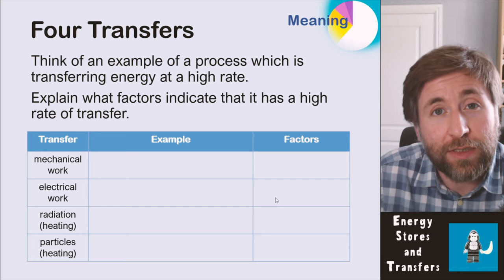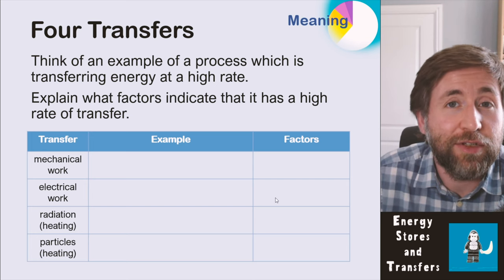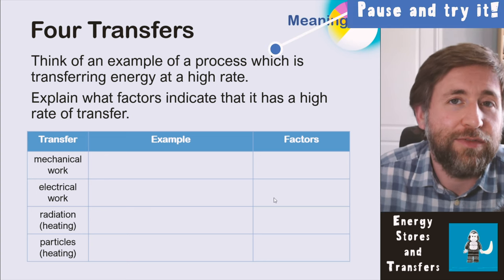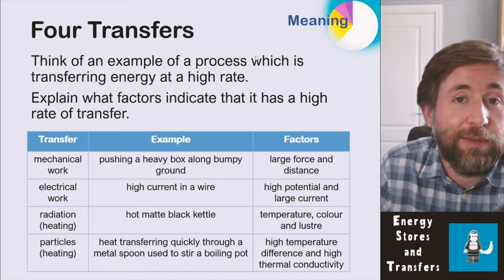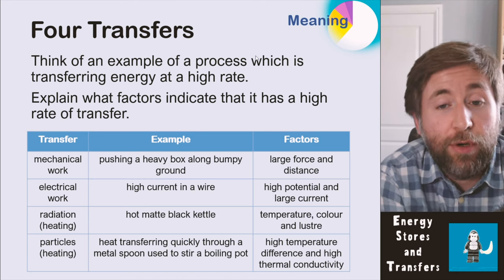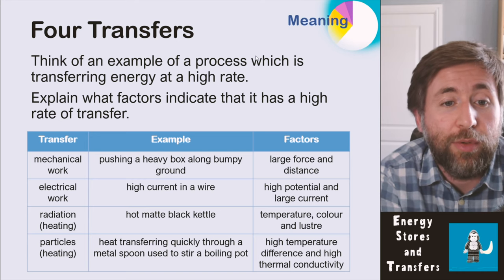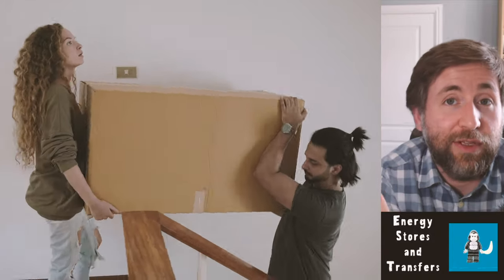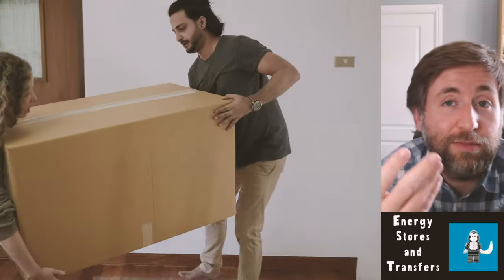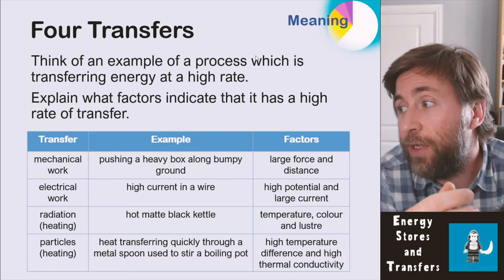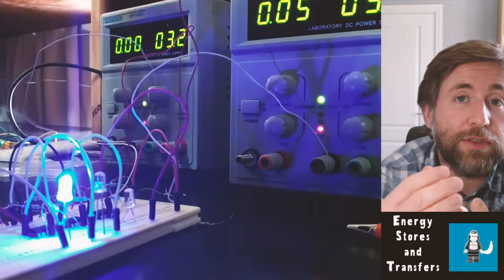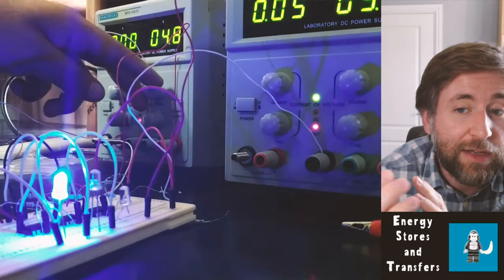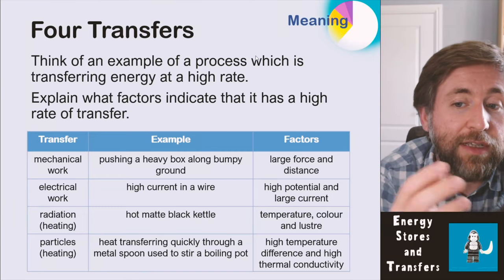You need to be able to recognise these four energy transfers and identify them. Pushing a heavy box along bumpy ground requires a lot of mechanical work — you'd apply a large force, and over a large distance you'd be doing more work. Electrical working might be a high current in a wire — lots of charged particles flowing at a high rate, with the factors being high potential difference and large current.